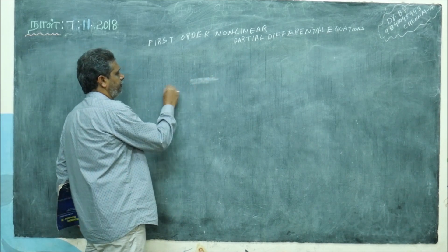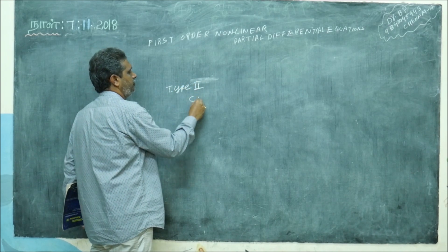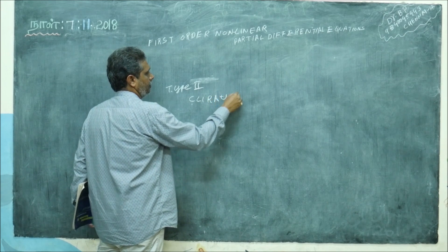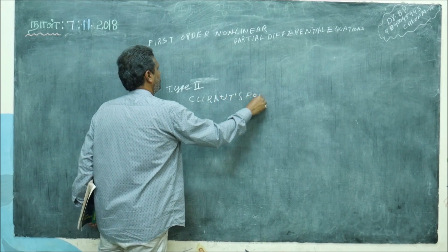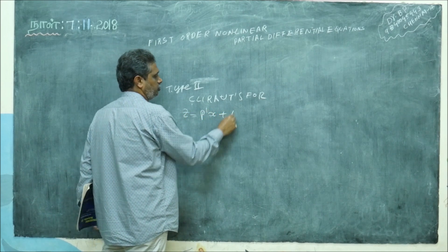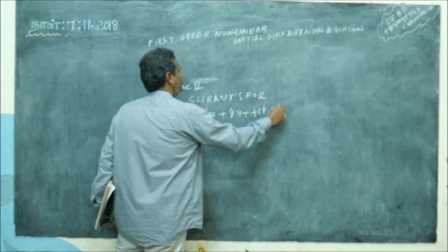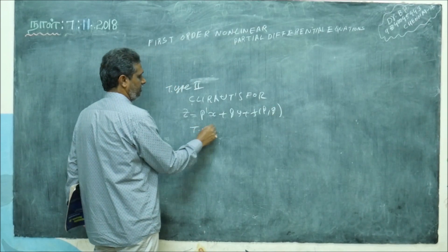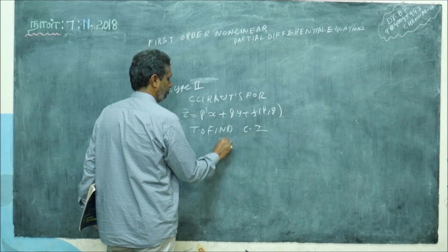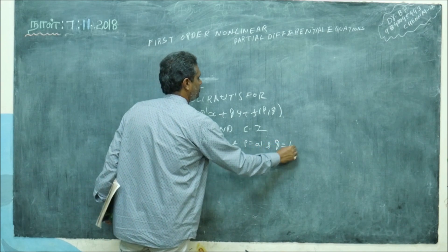Now, second type — Type 2 is what we call Clairaut's form. What I told is: z is equal to p·x plus q·y plus f of p, q. To find the complete integral, put p is equal to a and q is equal to b.